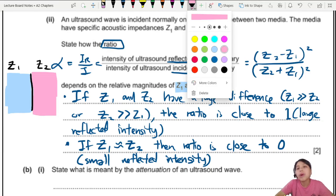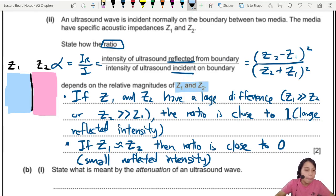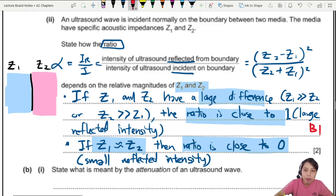So where does the mark come from? Number one. You talk about large difference. Ratio close to 1. That's one mark. You talk about if they are very close in value. And then the ratio becomes 0. That's another mark.